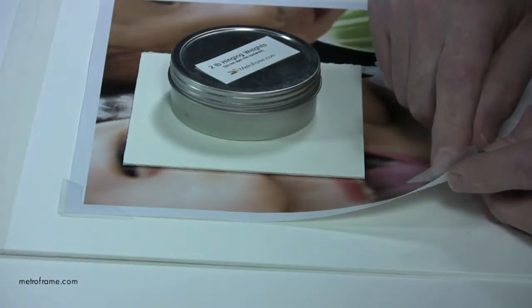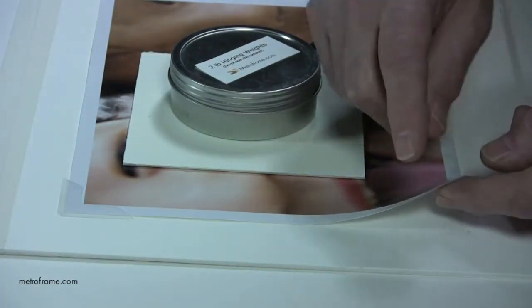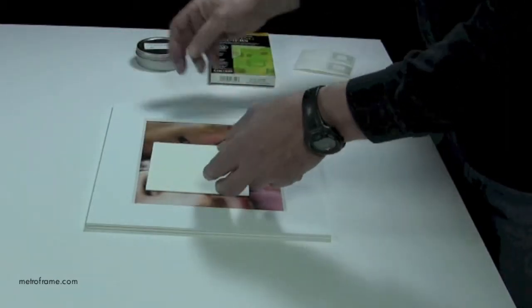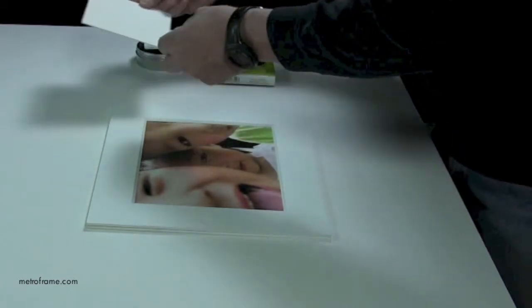Continue the process until all four corners are adhered to the backing board. You can now remove the weight and scrap mat board from the photo.